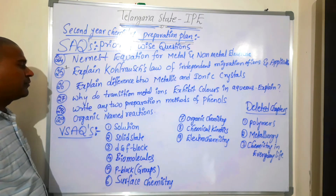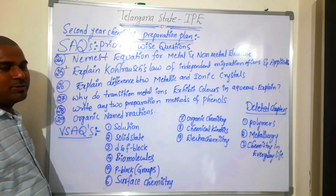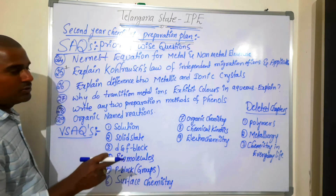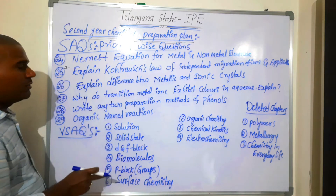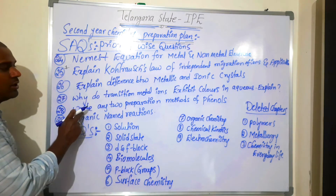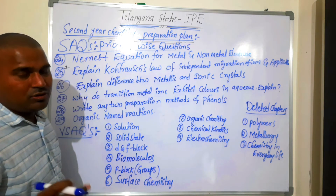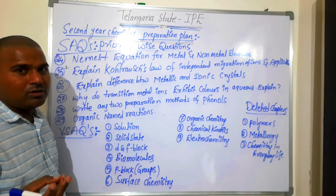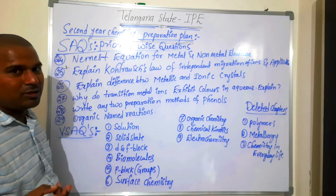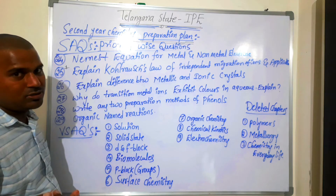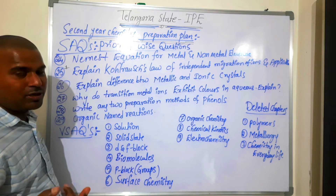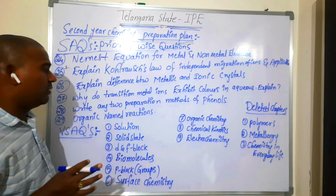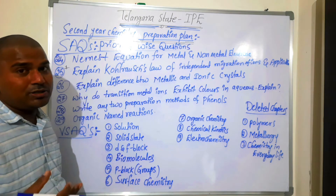Why do transition metals exhibit colors in aqueous solutions? — from D and F block. Write the preparation methods of phenol: phenol is generally prepared from cumene, and also phenol can be prepared by using benzene diazonium salt — two or three preparation methods.